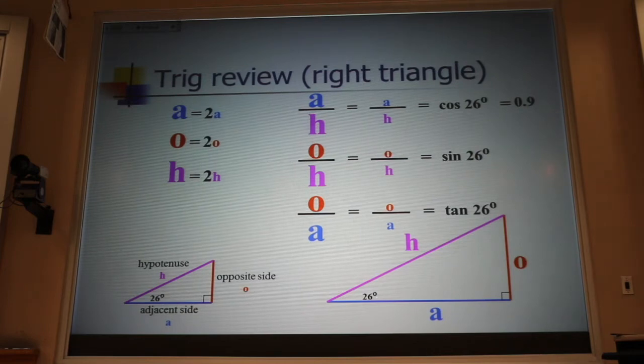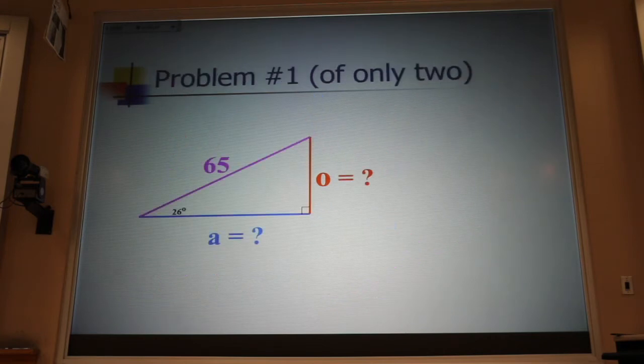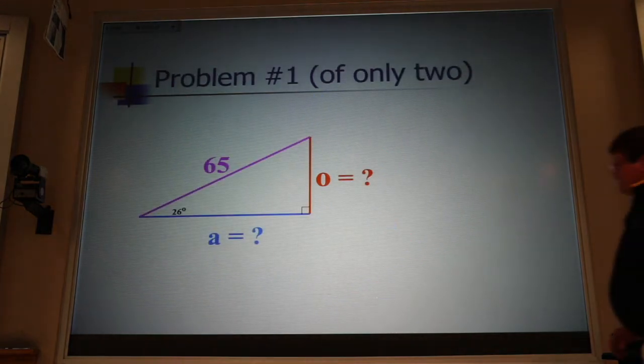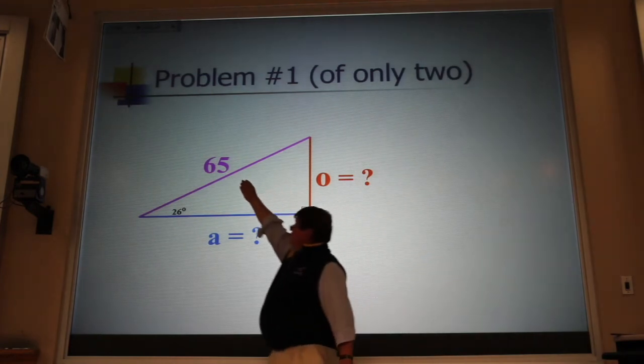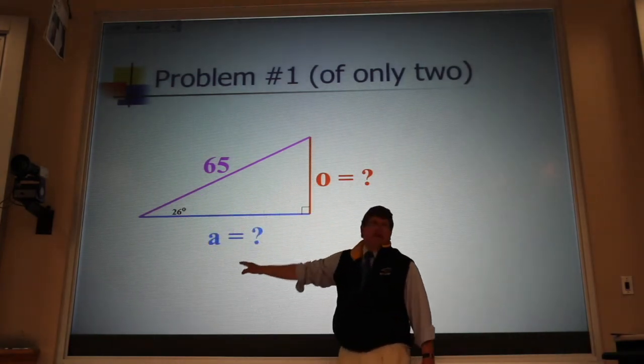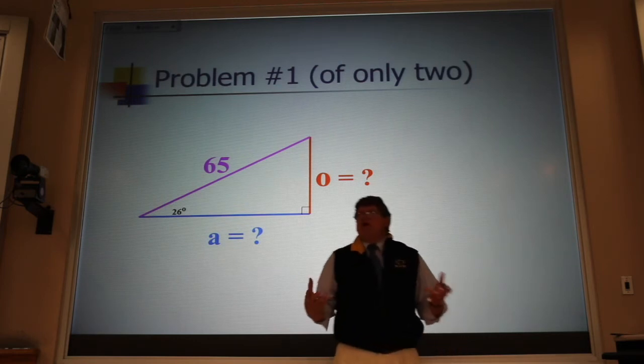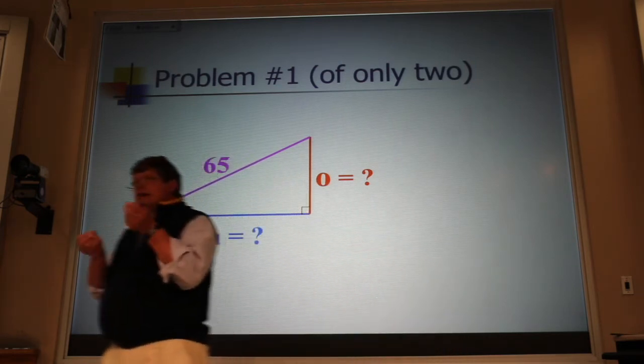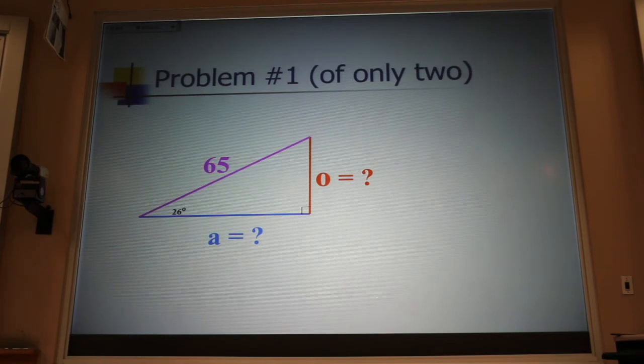Now, I told you that there are two problems that we will solve over and over and over again. This is the first. I give you the hypotenuse at this angle, and I ask you to find the other sides. We solve this problem when we take a vector, that's what we're talking about today, when we take a vector and we bust it up into its components, its x part and its y part.